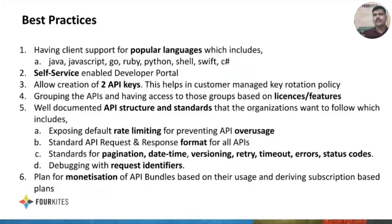We show only the relevant bundles to customers based on their license. We also follow well-structured API standards across 4KITES — including rate limiting, request size, request format, response format, different HTTP response codes and their meanings, and common authentication methods. These standards will be published and documented clearly in the developer portal. The final plan is to create a monetization model where customers who access our APIs more frequently can be placed on different plans with pricing based on their access level.